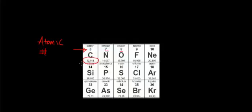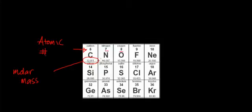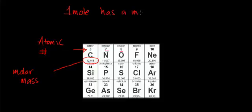The next number is sometimes called the molar mass, and what that tells us is the mass of one mole of atoms. In this case, the molar mass of carbon is 12.011. What that really means is: one mole of carbon atoms has a mass of 12.011 grams.